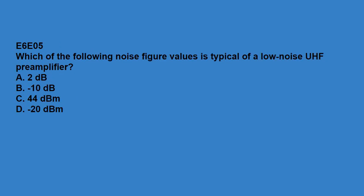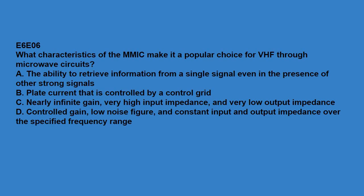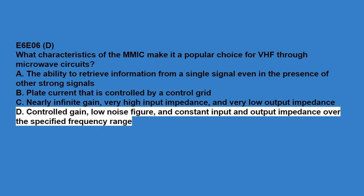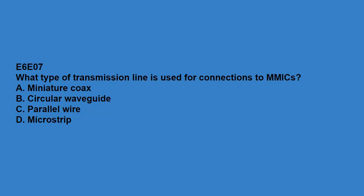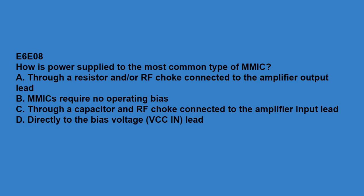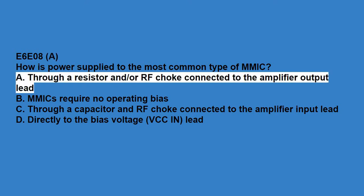E6E05: which of the following noise figure values is typical of a low-noise UHF preamplifier? 2 dB. E6E06: which characteristics of the MMIC make it a popular choice for VHF through microwave circuits? Controlled gain, low noise figure, and constant input and output impedance over the specified frequency range. E6E07: what type of transmission line is used for connections to MMICs? Microstrip. E6E08: how is the power supplied to the most common type of MMIC? Through a resistor or RF choke connected to the amplifier output lead.